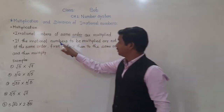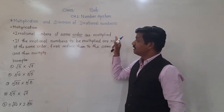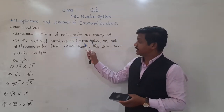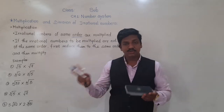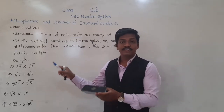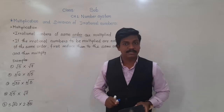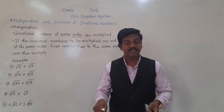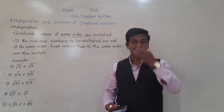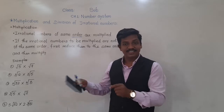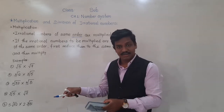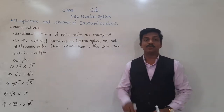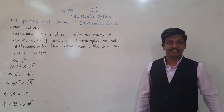Second rule: if the irrational numbers to be multiplied are not of the same order, we have to first reduce them to the same order. We have to make their order same. And to make their order same, we have to find the LCM of the given orders, and we have to make both orders of both irrational numbers equal. That we will learn while doing the multiplication.